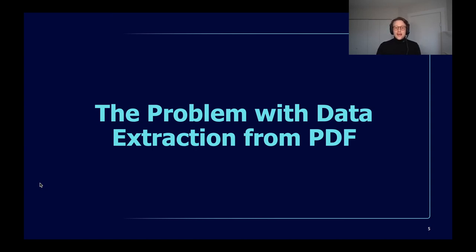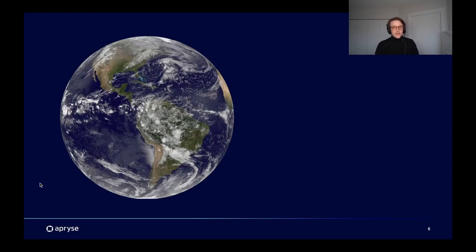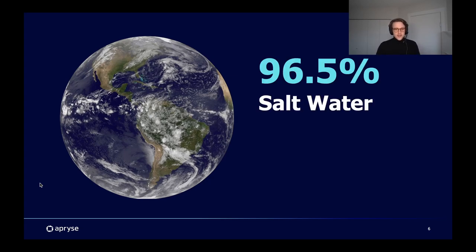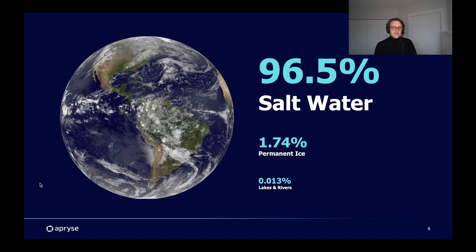To kick things off, we'll dive into how our developers at Apprise solved the problem of making data extraction just work out of the box. But before we do, let me tell you a little story. We have an abundant amount of water on our planet — 71% of the Earth's surface is made up of water. However, a large amount of that is salt water: 96.5% saline. Most freshwater is contained in permanent ice caps, glaciers, and mountain snow, and only 0.013% of all water is surface-accessible freshwater.